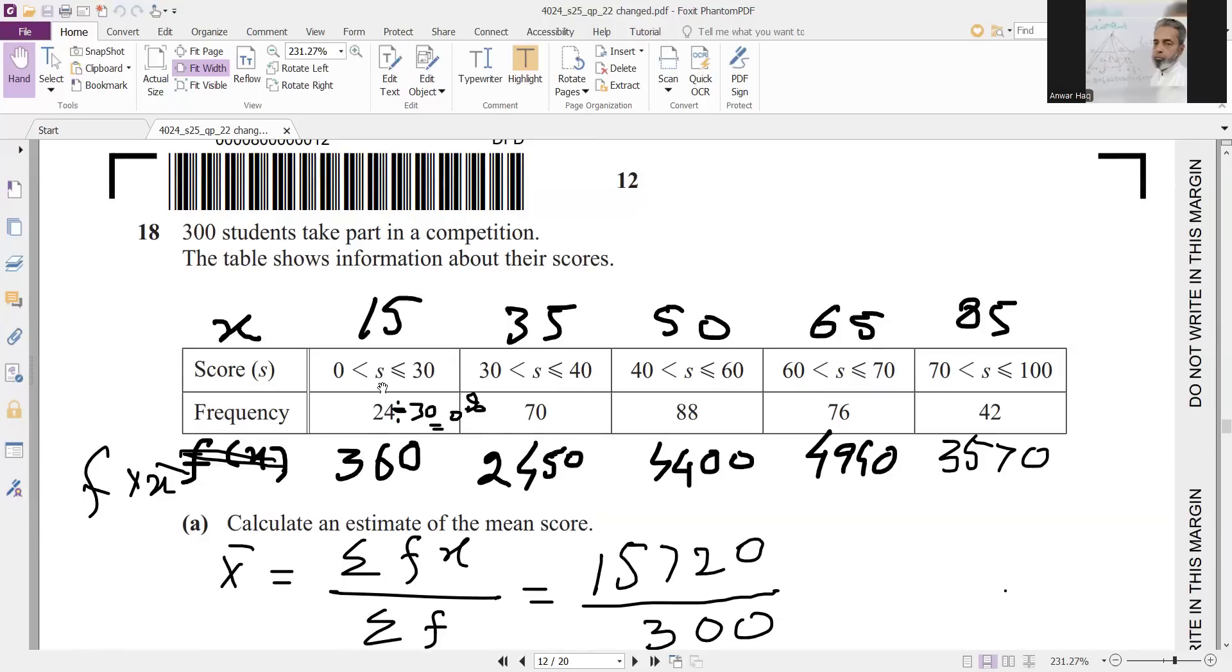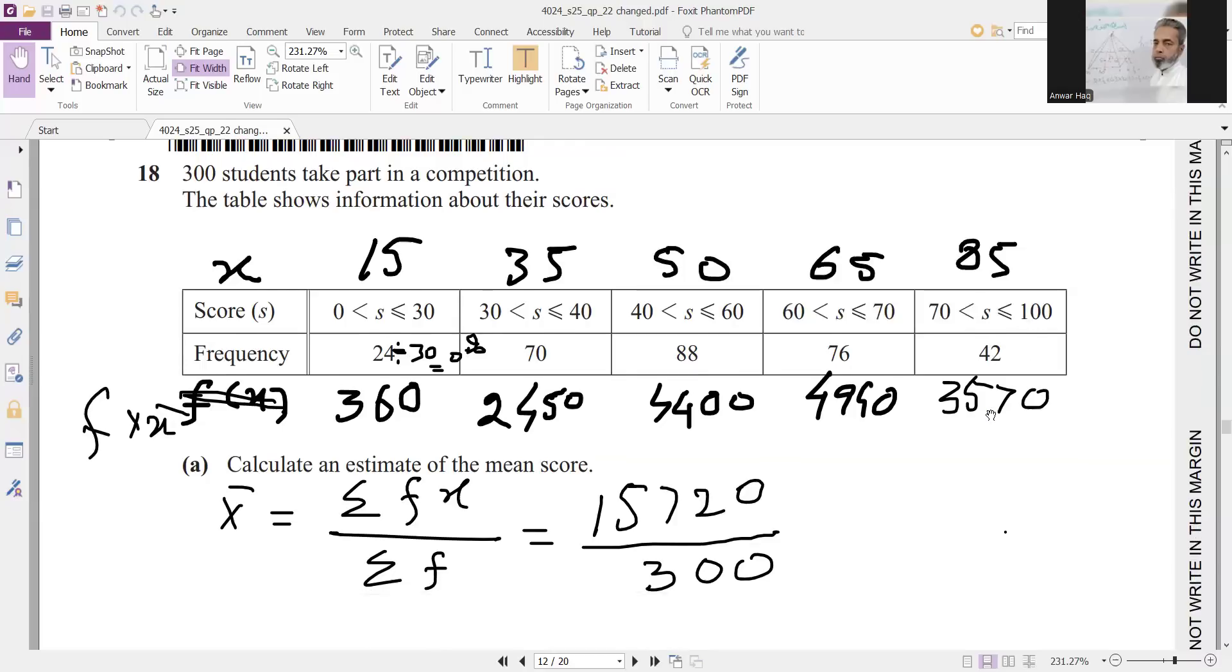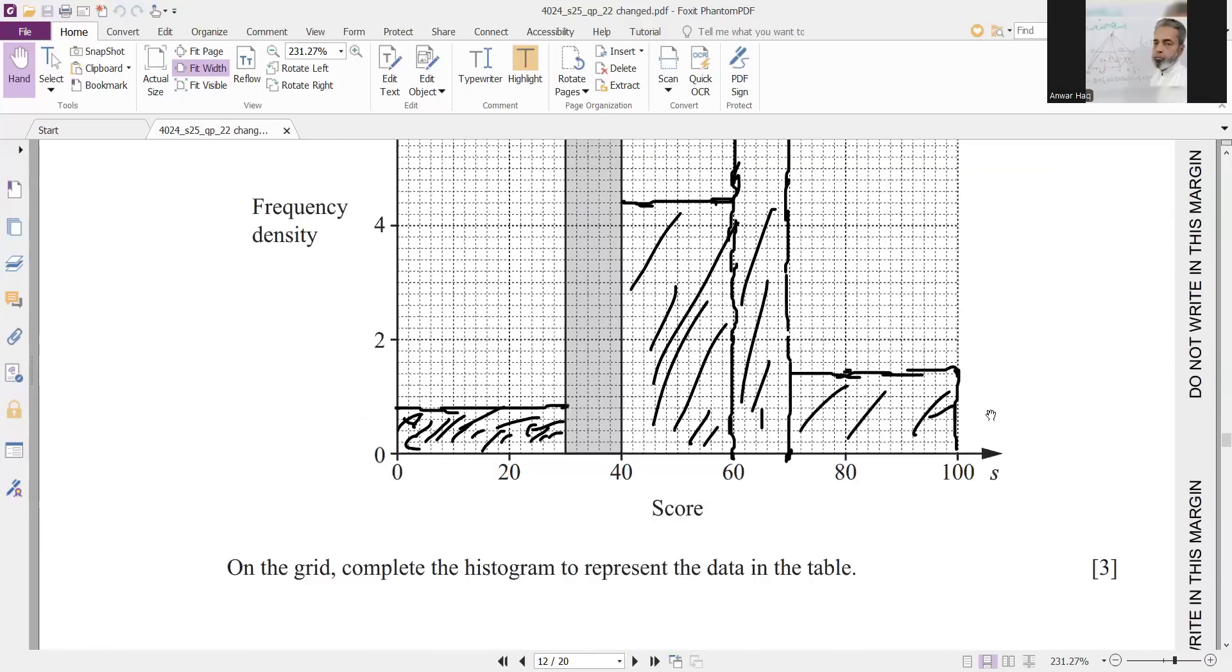So we will calculate the frequency density, frequency divided by class width. 0 to 30, 30 is the class width. I have done for you only this part. 24 divided by 30 is 0.8, and same with the other intervals. Frequency divided by 20, and 76 divided by 10, and 42 divided by 30. So you will have this histogram.